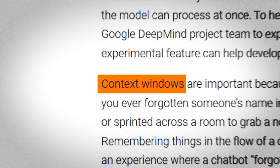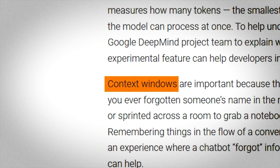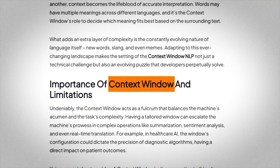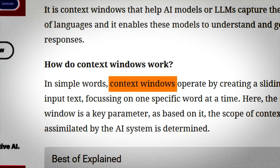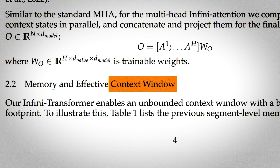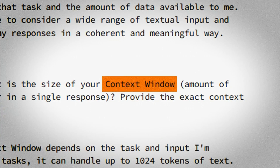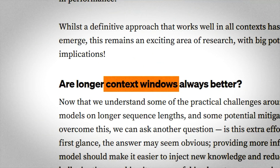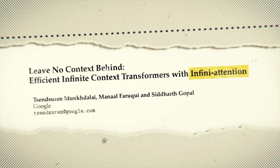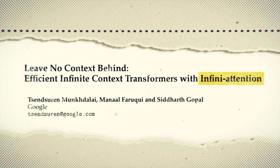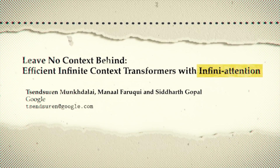Context window — these two words might have been the most sought after and anticipated in large language model research papers and announcements, such as the ones by OpenAI, Anthropic, or Google. Well, thanks to Google's most recent paper called Infini-Attention, context windows are no longer a problem. Let's see how they accomplish this.